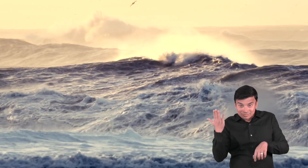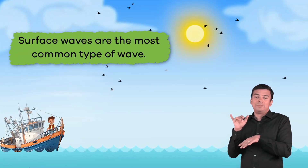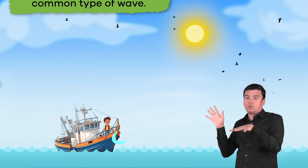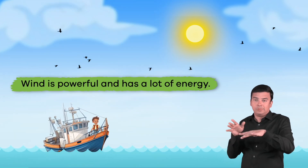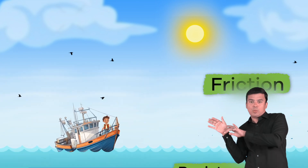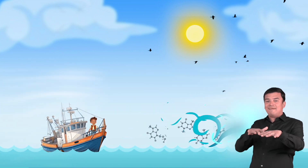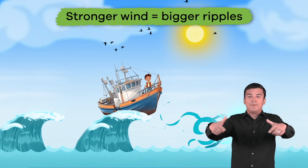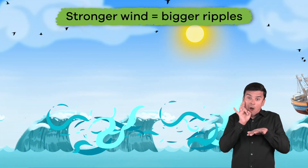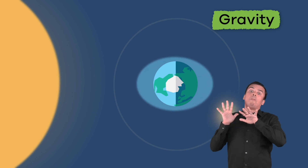If you have ever seen the ocean in real life, you have probably heard waves crashing against the shoreline. These waves can be formed in different ways. First, waves can form when the wind blows across the surface of the ocean. These surface waves are the most common type of wave. Because the wind is powerful and has a lot of energy, it creates friction, or resistance, between the wind and water molecules, which makes the water ripple. And the stronger the wind, the bigger the ripples.